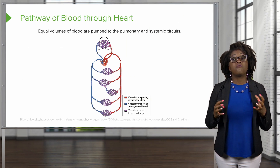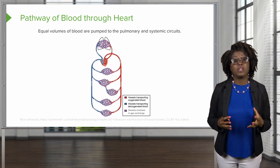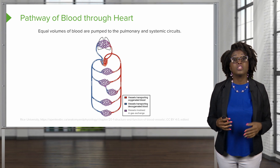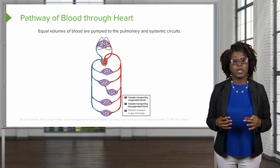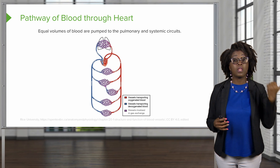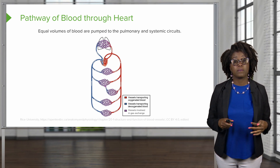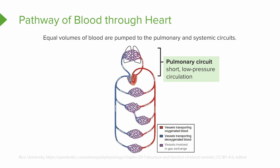There are equal volumes of blood that are going to be pumped through both circuits. So we're going to have an equal volume of blood pumped to the lungs as well as to the rest of the body. There are differences though in that the pulmonary circuit is a shorter circuit, and it is a low-pressure circulation.